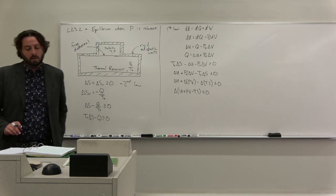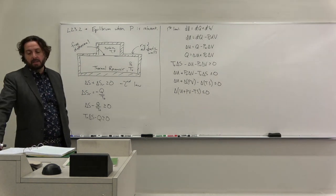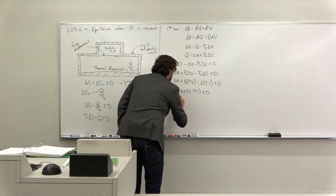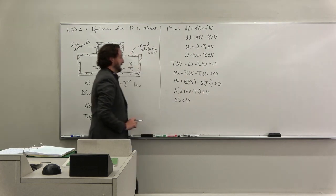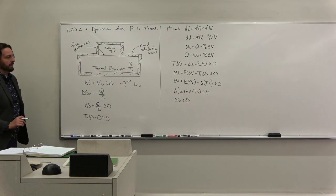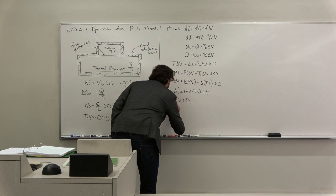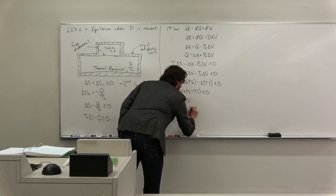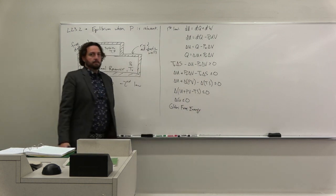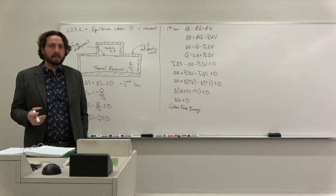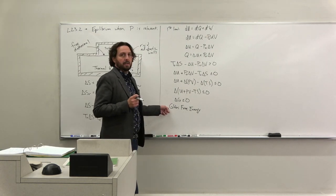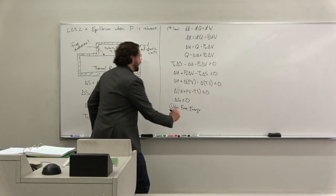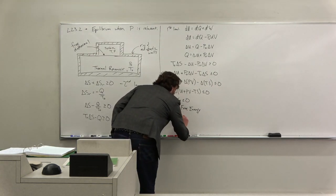What is U plus PV minus TS? We know this is G. That is the Gibbs free energy. And so, actually, the Gibbs free energy, then, is really the relevant energy whenever we're thinking about temperature and pressure. Remember, G was temperature and pressure.